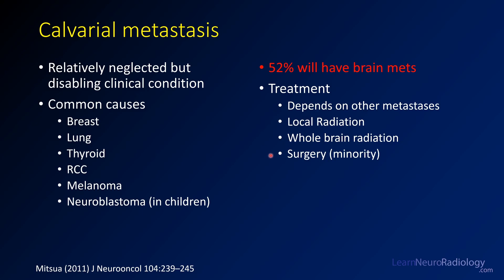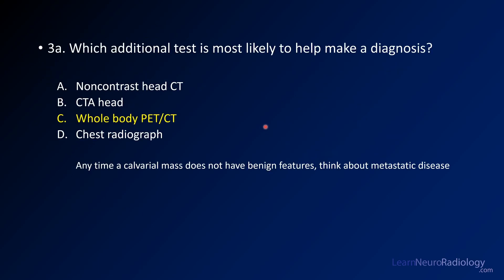A minority of these patients are going to go on to have surgery, but it will really depend on what other metastases are present. Local or whole brain radiation are really key players here. The answer to which additional test is most likely to help is PET-CT, because you're thinking this might be a metastasis, so you want to look to see if you can find a primary malignancy elsewhere. Those other tests might help a little, but ultimately you're going to need to look for a systemic malignancy.